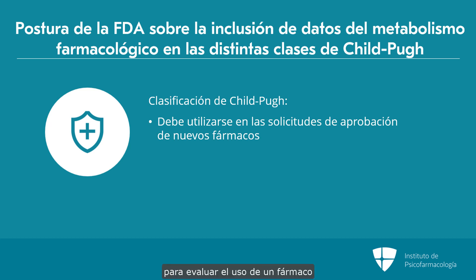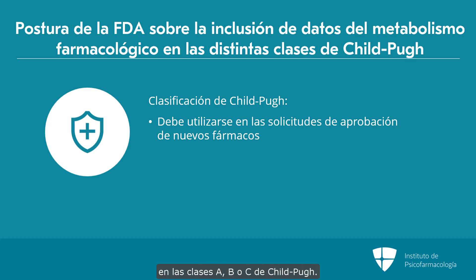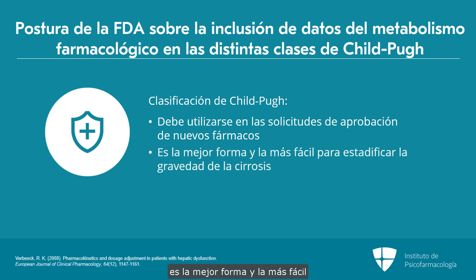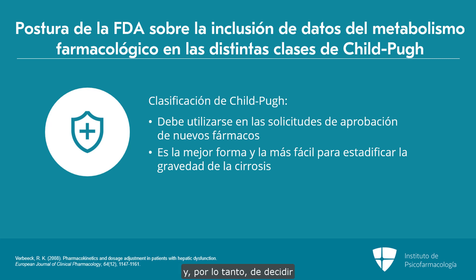Meaning, if you want to have language about the use of your medication in hepatic impairment, you have to do studies for people who are Child-Pugh A, Child-Pugh B, and Child-Pugh C. The Child-Pugh classification is the best and easiest way for any clinician to stage somebody's severity of cirrhosis and therefore decide if they need to alter initial drug dosages.